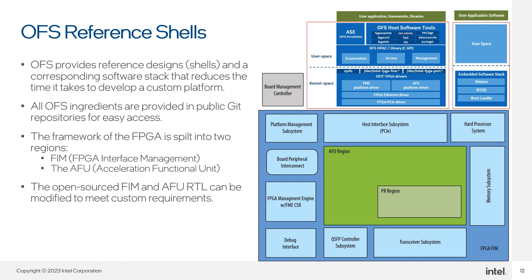Second is the AFU, or AFU region, shown in green, that provides a standard set of inputs and outputs for you to build your workload, which can be ported across other OFS shell designs, enabling reusability. Workload developers have the option to choose between an RTL or oneAPI-based design flow. FPGA design cycles can generally take 9 to 12 months, but with OFS you are provided a time-enclosed, optimized reference design along with a full software stack that considerably reduces time to market.